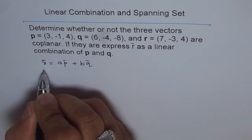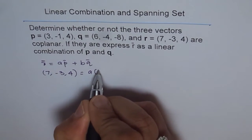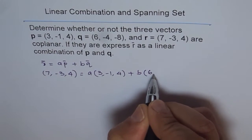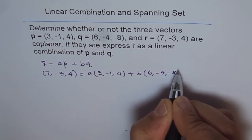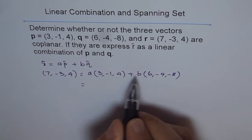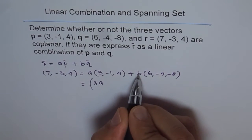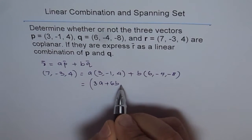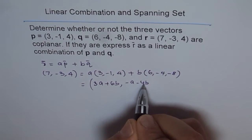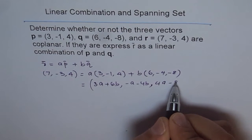R is given to us as (7, -3, 4), and A times P is (3, -1, 4), plus B times Q is (6, -4, -8). Combining these values, we have the components: 3A + 6B, then -A - 4B, and the third component 4A - 8B.